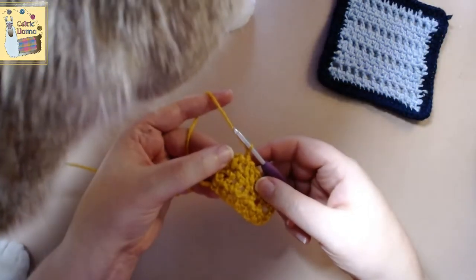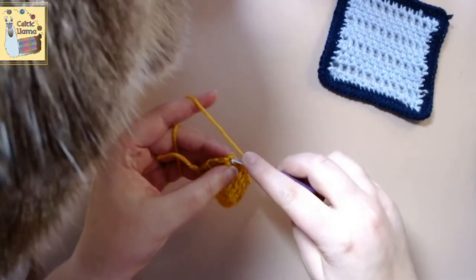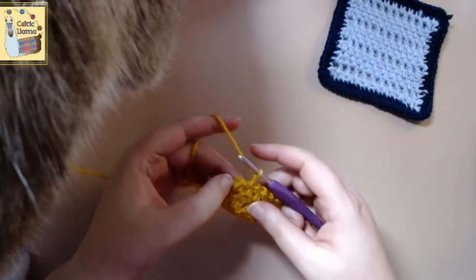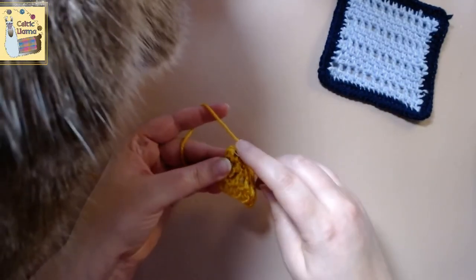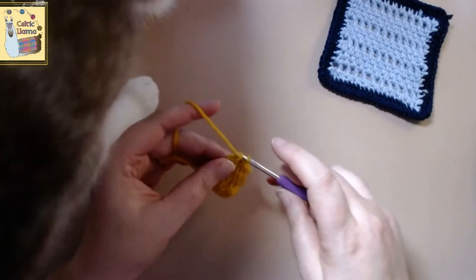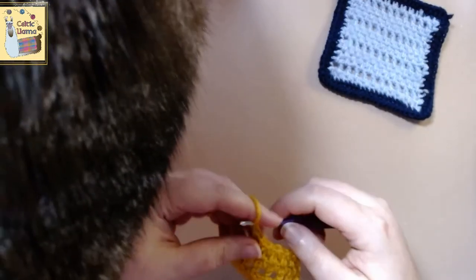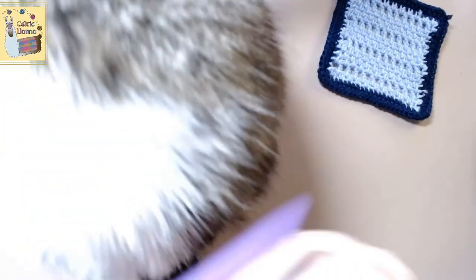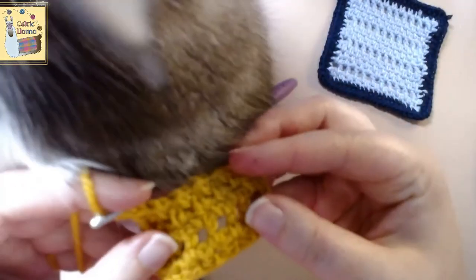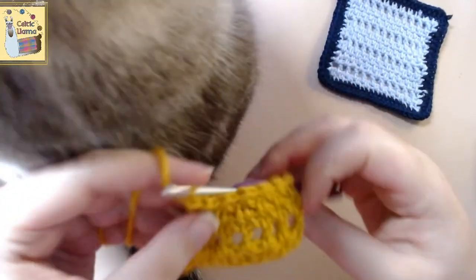So to continue on with the eyelet pattern, you'll just end up repeating row two through four. So that'll be the double crochet row and then two single crochet rows. So you can see how the pattern ends up for me.